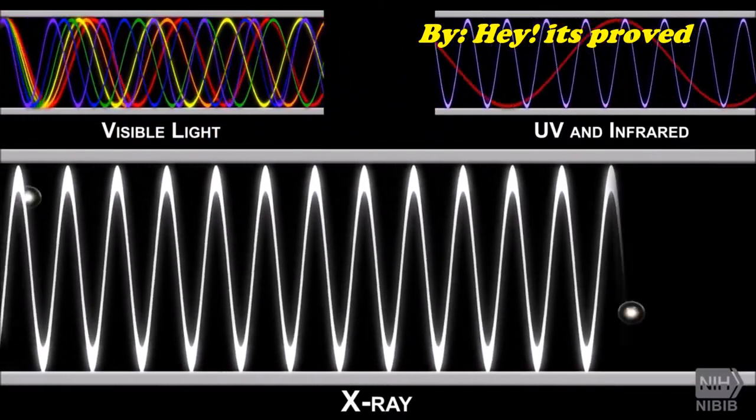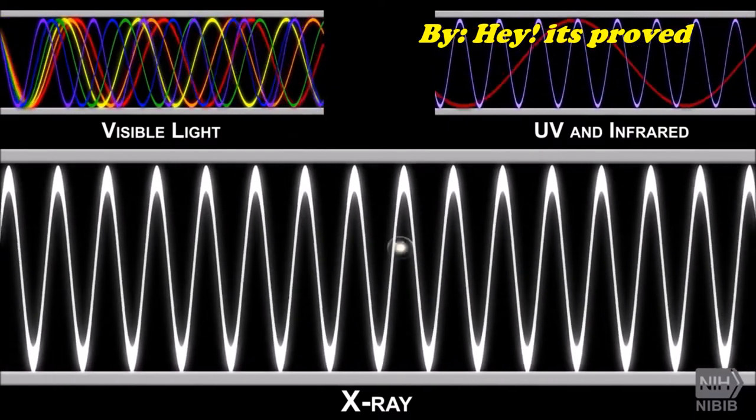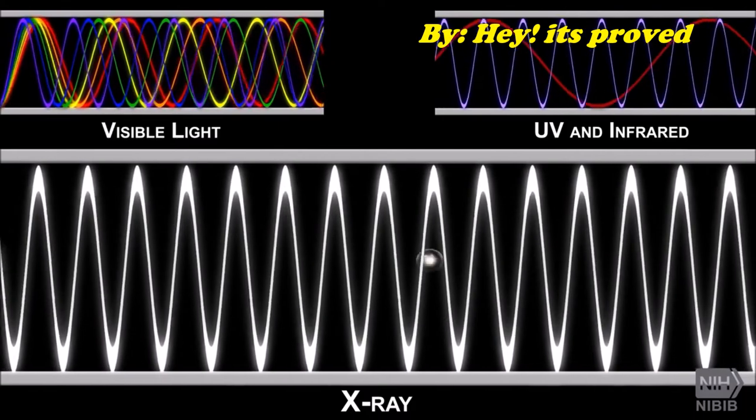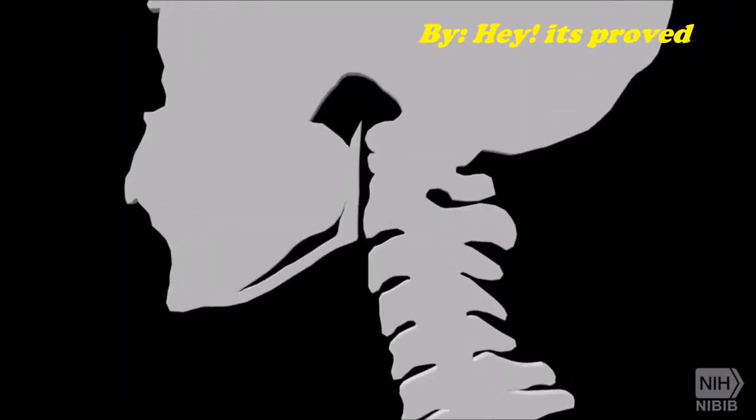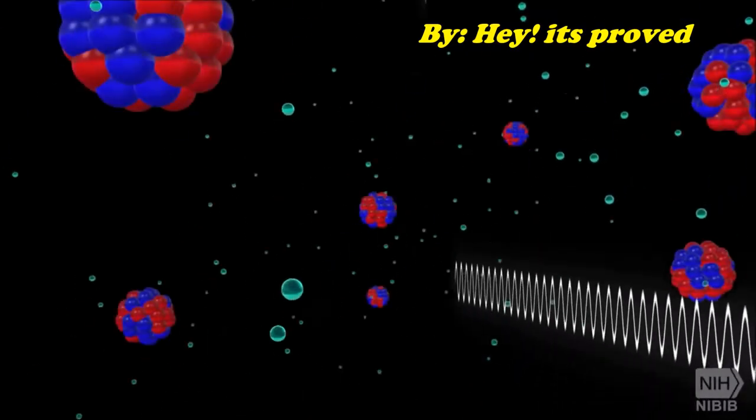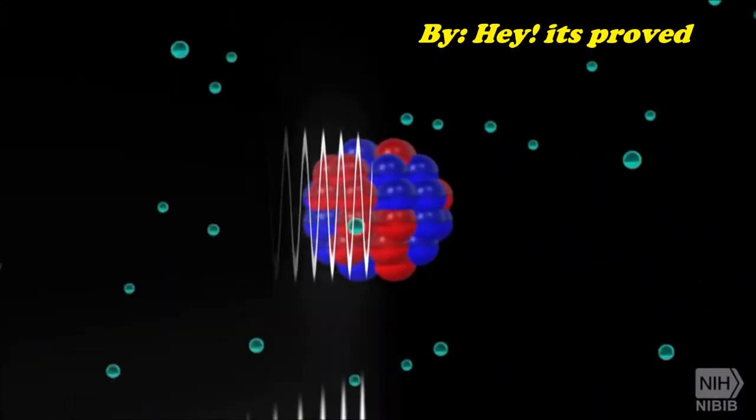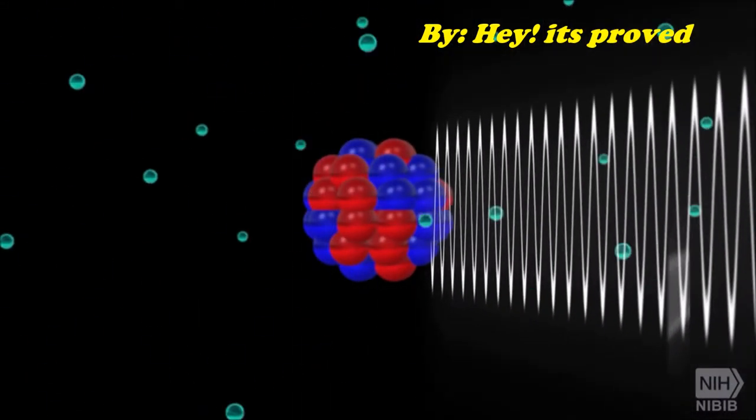X-rays have very short wavelengths that, unlike visible light, are able to pass right through most tissues in the human body. Since bones contain calcium, a denser material than most other tissues, they are able to stop some of the x-rays and can thus form a shadow.